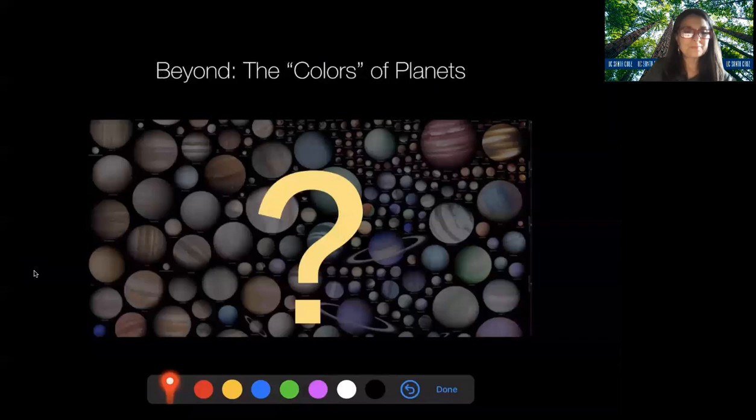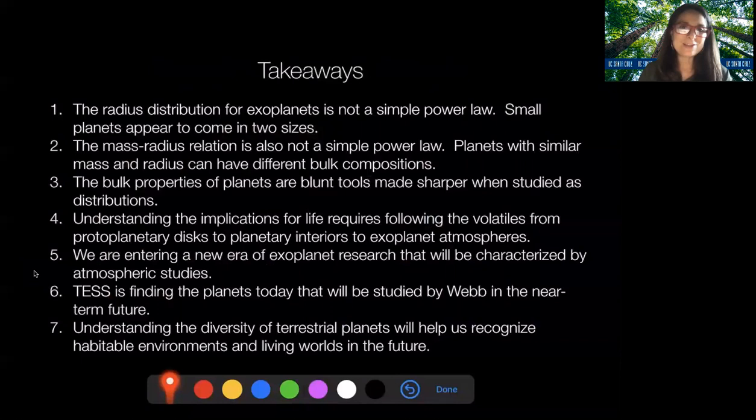So with that, I will end. I have a series of takeaway messages here from my talk that you can pause and read on your own time. I want to encourage you to stick around and or watch the other talks in this special session. Hillary Hartnett is going to talk about the sources and sinks of chemical and biological signatures in an Earth system. Tori Holler is going to talk about the prospects for life in our own solar system, and David Diemer is going to tell you what we know so far about the origin of life. So thank you very much. Stay tuned with exoplanet science. It's going to be an exciting few decades. Take care.